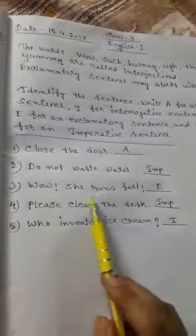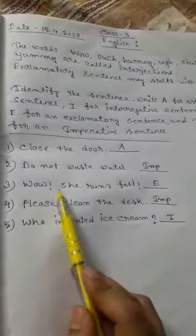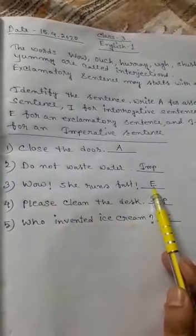Number three: wow, she runs fast! It has an exclamation sign, so you have to write E for exclamatory sentence.